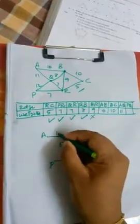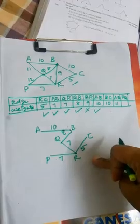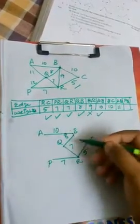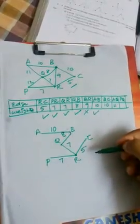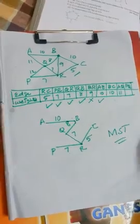We have included these four edges. The next edge will be AB. This is nothing but this one. Even this doesn't form a loop, so we are including this. So just carefully observe this diagram: it contains 1, 2, 3, 4, 5 edges and 6 vertices.